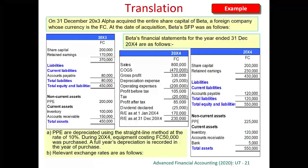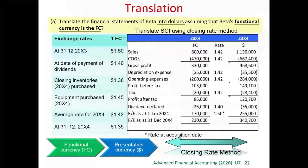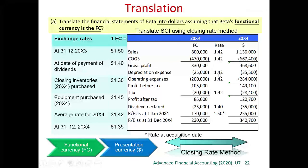The question did not tell us the exact actual exchange rate, so we will use the average rate to approximate for all income and expenses. For sales, for example, we use the average rate: 800,000 times 1.42, which is the average rate for the year, giving 1,136,000. Cost of sales uses the average rate, depreciation expense uses the average rate, operating expense uses the average rate, and taxation uses the average rate. This applies to all income and expense items.